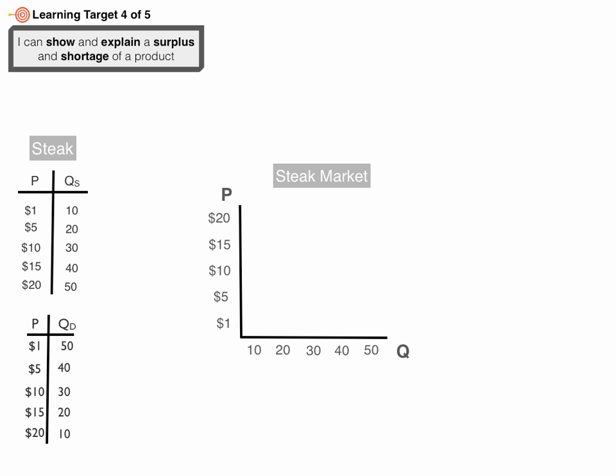We have our steak market here: price on the y-axis, quantity on the x-axis. The supply schedule at the upper left shows that as price goes up, quantity supplied goes up because of the profit motive.